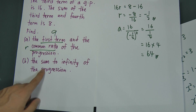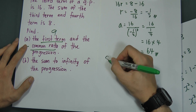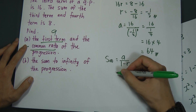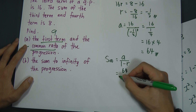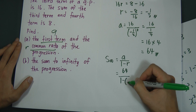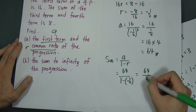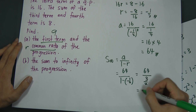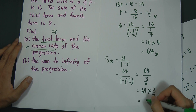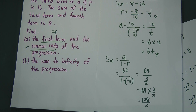Part B asks for the sum of infinity of the progression. Sum of infinity equals A over 1 minus R. We have A equals 64 and R equals negative 1 over 2. So it's 64 divided by (1 minus negative 1/2), which is 64 divided by 3 over 2, equals 64 multiplied by 2 over 3, giving 128 over 3.